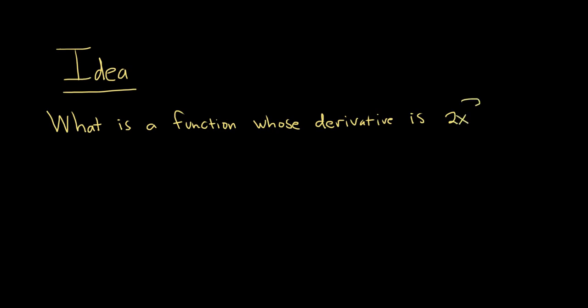What is a function whose derivative is 2x? One possible example would be F of x — I'll use a capital letter for F — equals x squared. Because if you take the derivative of x squared, you get 2x via the power rule.